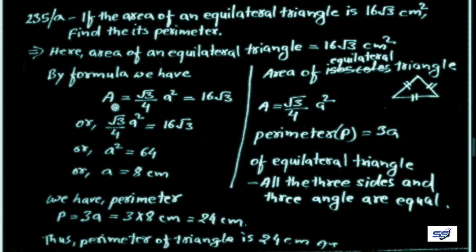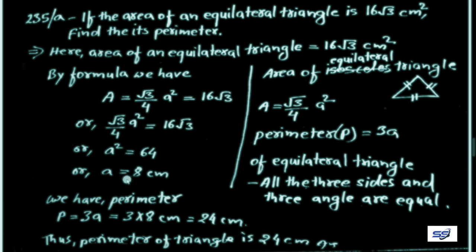By formula, the area of an equilateral triangle is A = (√3 / 4) × a². Setting this equal to 16√3: (√3 / 4) × a² = 16√3. The √3 cancels on both sides, giving a² = 4 × 16 = 64, so a = 8 cm. Each side is 8 cm, meaning a = b = c = 8 cm.